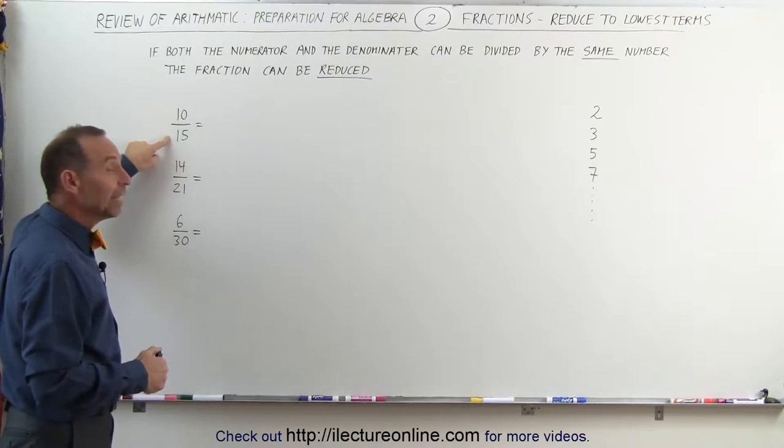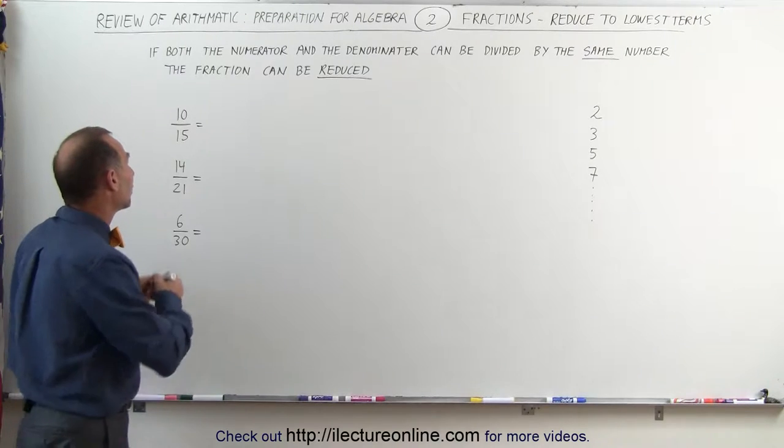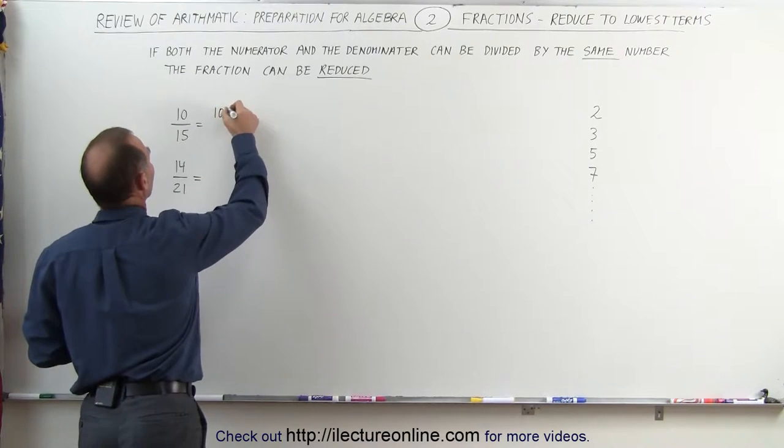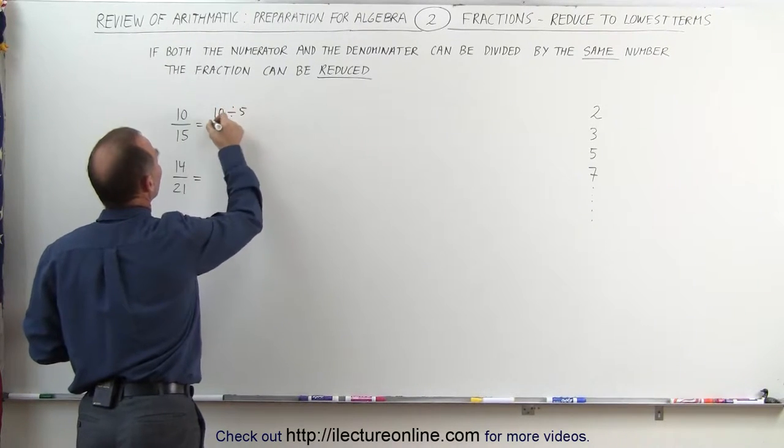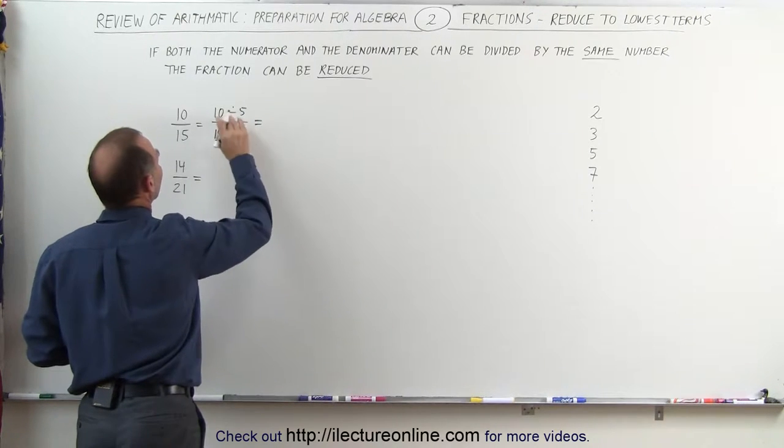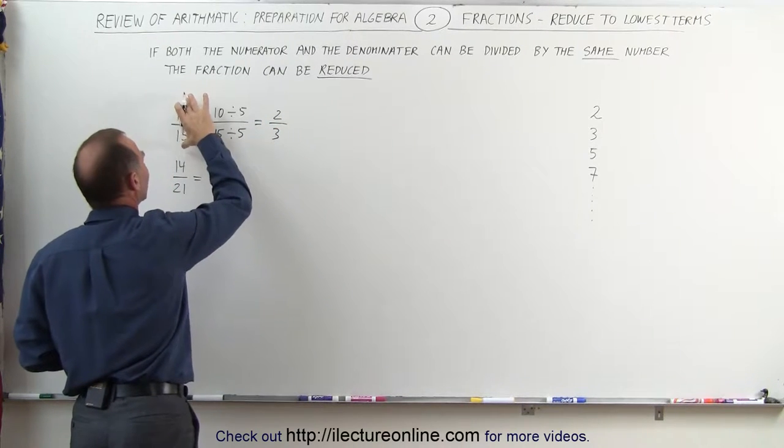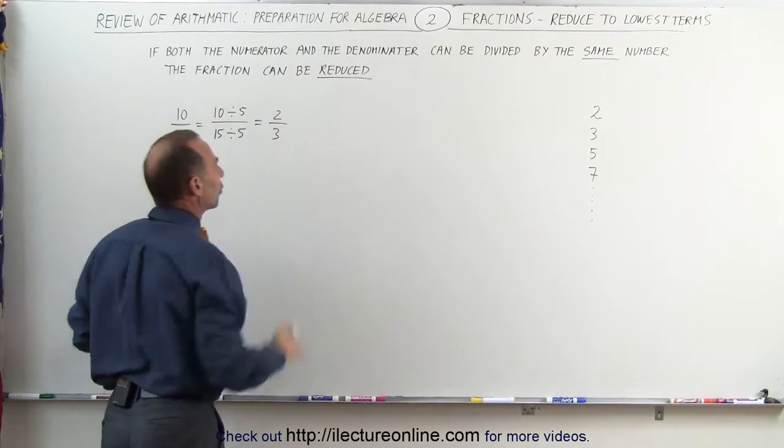Ten ends in a zero, fifteen ends in a five. Both those numbers are divisible by five, so we can write this as ten divided by five divided by fifteen divided by five. And ten divided by five is two, fifteen divided by five is three, so the fraction ten fifteenths can be reduced to two-thirds.